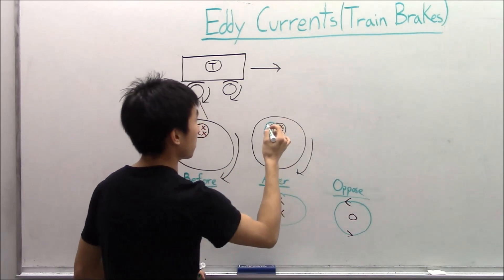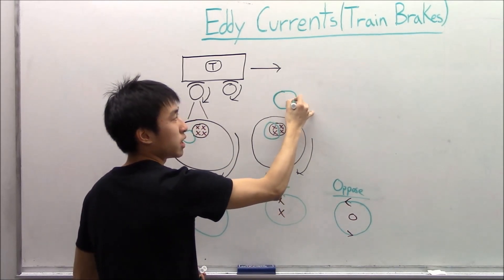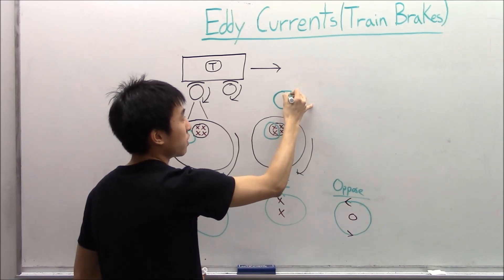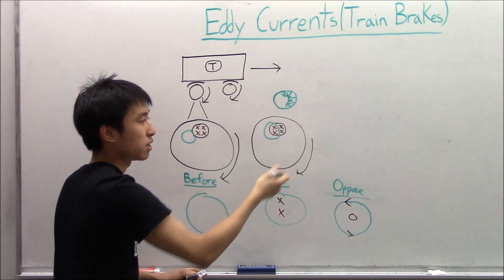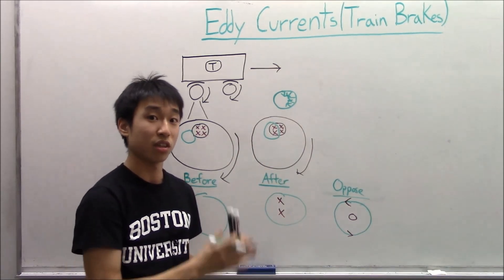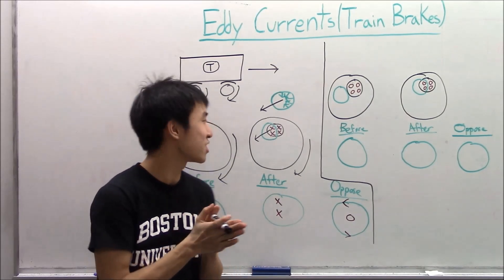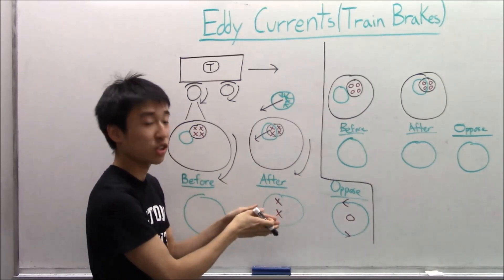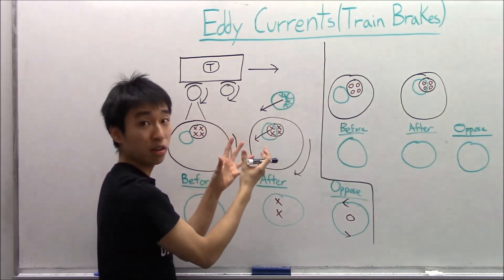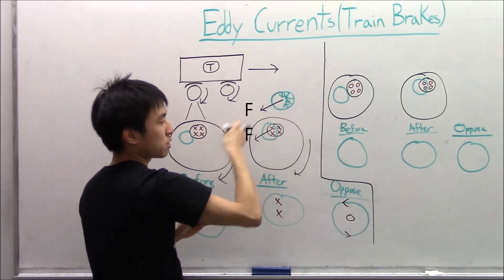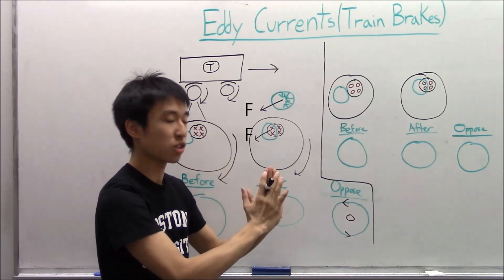Let me draw another picture to help. You get a force over here, over here, over here, over here, and over here. These forces are all opposing the rotation of the wheel in that direction — that's what causes our train to eventually slow down and stop. To reiterate: the induced current generates forces that point towards the center of your circle, and overall you have a net force opposing the rotation of the wheels, which causes the train to slow down.